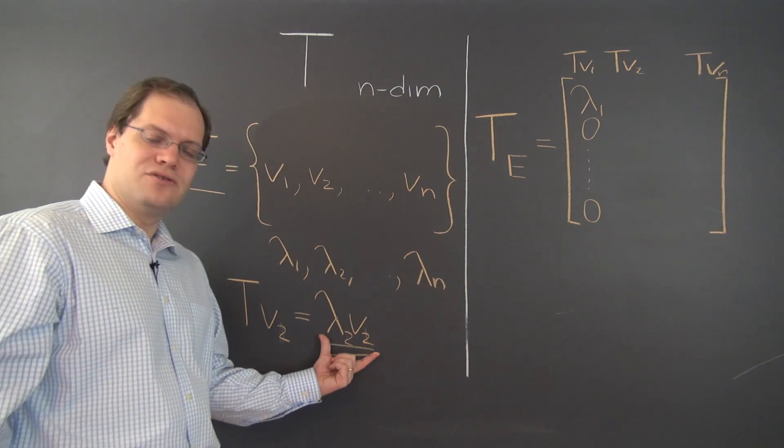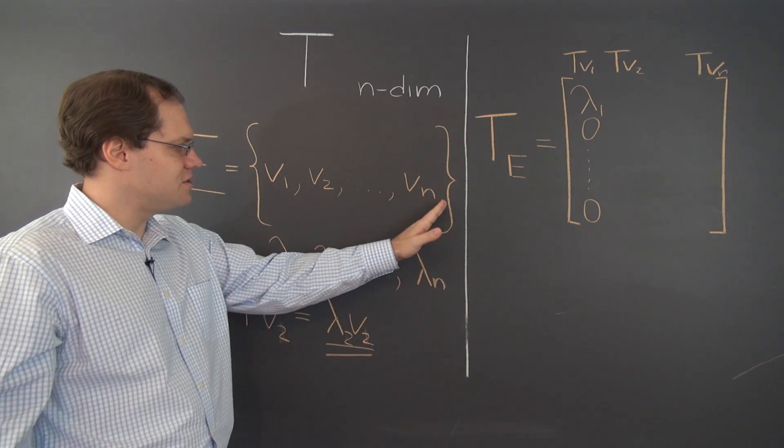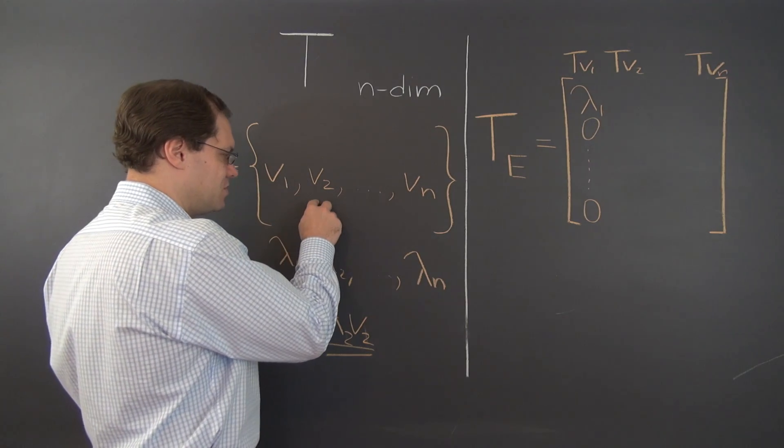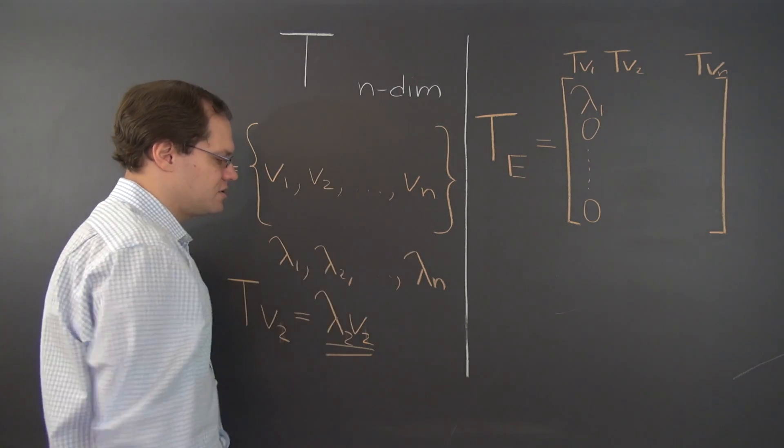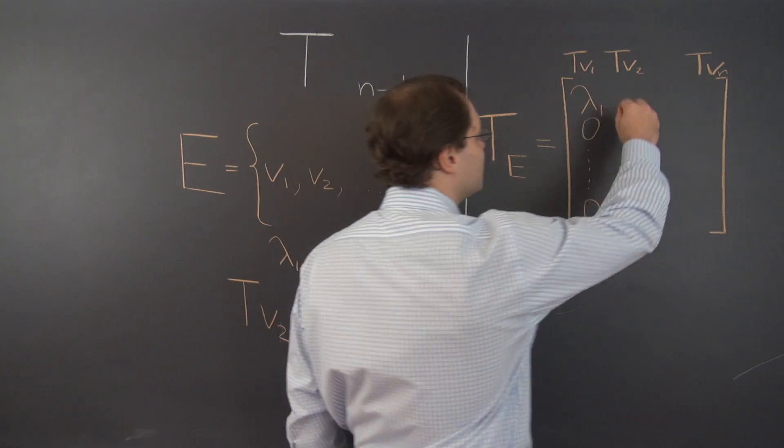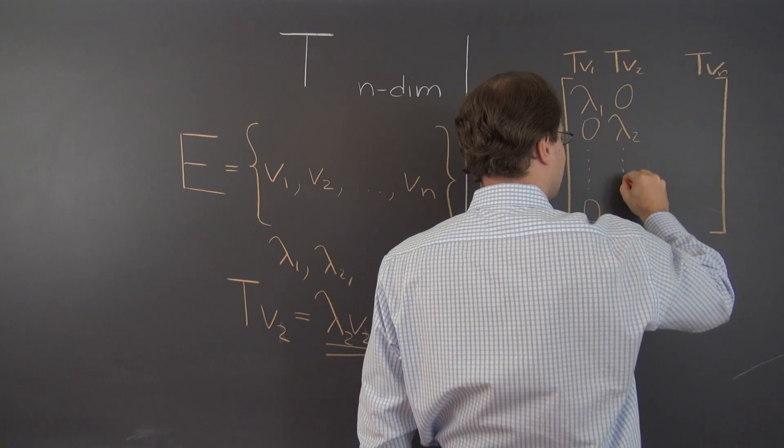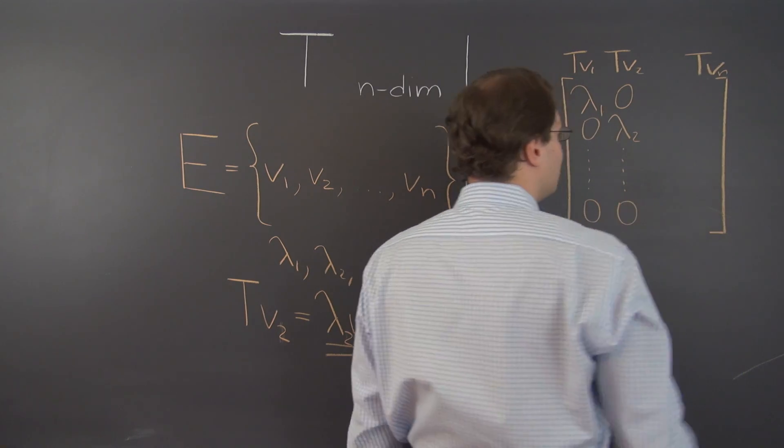And now we have to decompose this vector with respect to this basis. And of course, that decomposition is 0, lambda 2, and then a bunch of 0s, and 0s all the way to the end. So what we found is that it's 0, lambda 2, and then a bunch of 0s all the way to the end.